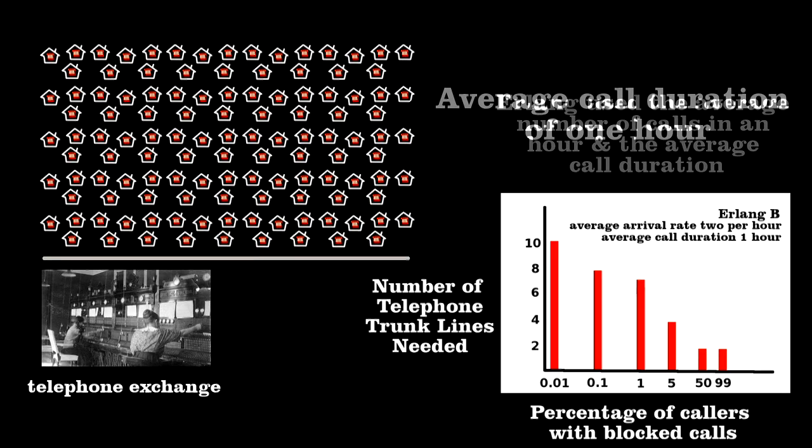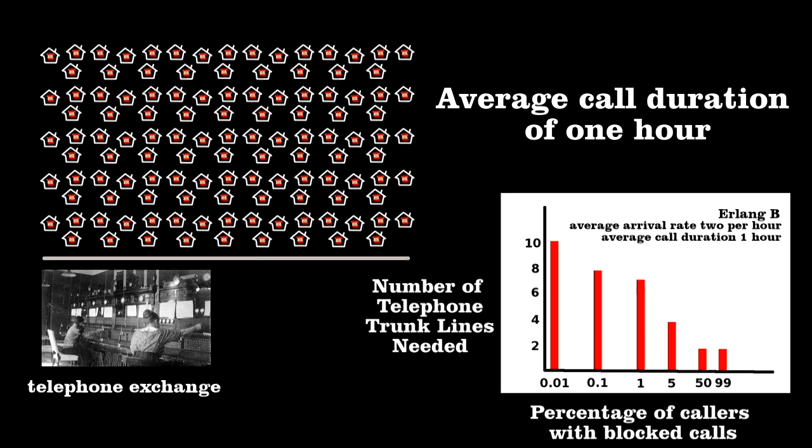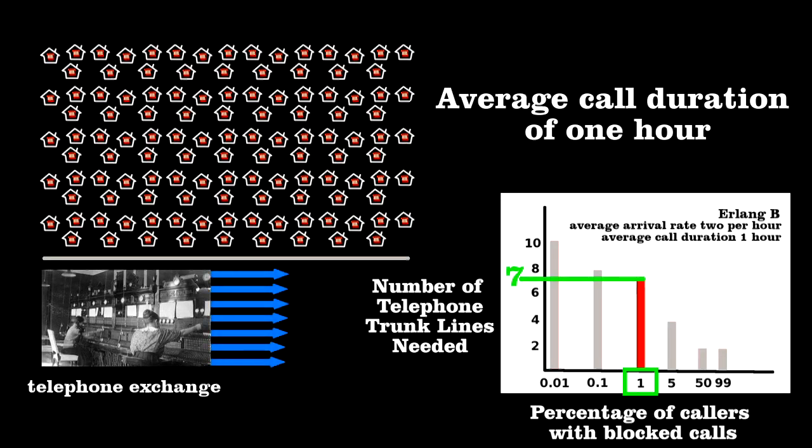To make the calculation simple, I've assumed that Danes like to talk a long time, one hour on the average. Erlang showed that for only 1% of the people to have a blocked call, you'd need to install seven trunk lines.